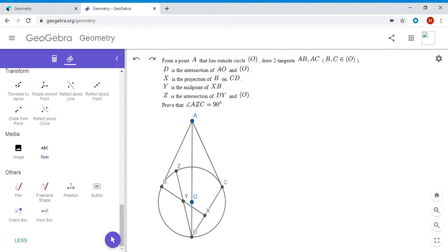Well, the first thing that I did was I let BC intersect AD at a point E. So I just drew in AZ and ZC there also, just because we want to show that AZC is 90 degrees, so I figured it would be good to draw those two segments in.